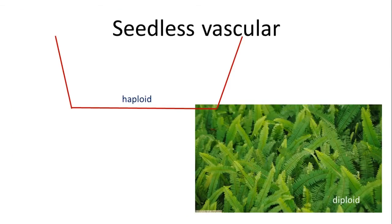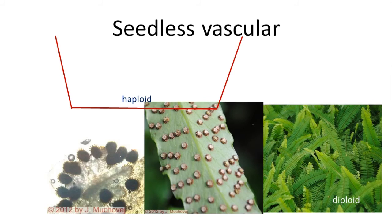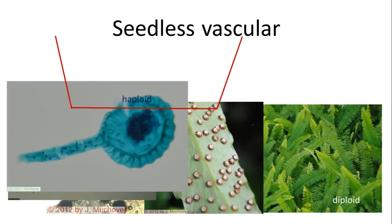If we look at seedless vascular plants — things like ferns — we see that the part of the fern we always see is the diploid part, which is the sporophyte. If you look at the back of the leaf, you see little structures called sori, and inside those you have these sporangia. The sporangia produce little spores, and if you were to take one of these leaves and cut it open, you'd see the spores on the inside.